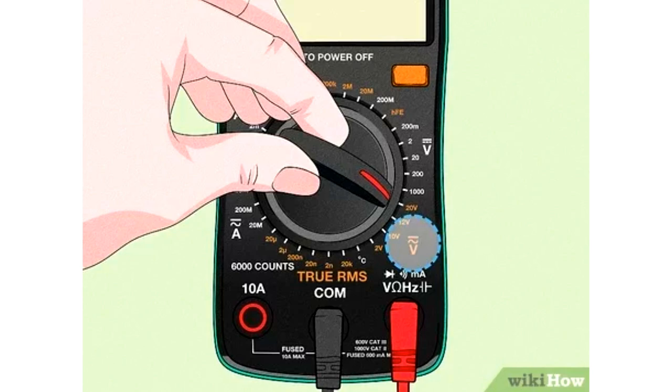DC, or direct current, voltage is mostly used to measure batteries. DC voltage is also used in cars and many small electronics.